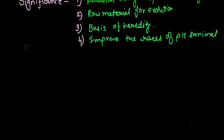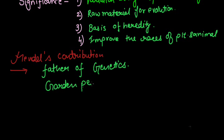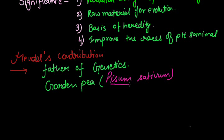Mendel chose the garden pea, whose botanical name is Pisum sativum. It is a rule to underline the genus name and the species name. The first letter of the genus name should be in capital letter. In the species name — also called the specific epithet — the first letter of the species should be in small letter and it should be underlined. This is the rule for writing biological names.